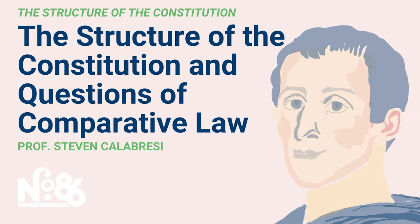Thanks for joining this episode of the No. 86 Lecture Series, which continues the conversation in the 85 Federalist Papers about the proper structure of government. Today's episode features Professor Stephen G. Calabresi, the Clayton J. and Henry R. Barber Professor of Law at Northwestern Pritzker School of Law. He is Chairman of the Federalist Society's Board of Directors. The Federalist Society takes no position on particular legal or public policy issues. All expressions of opinion are those of the Speaker.